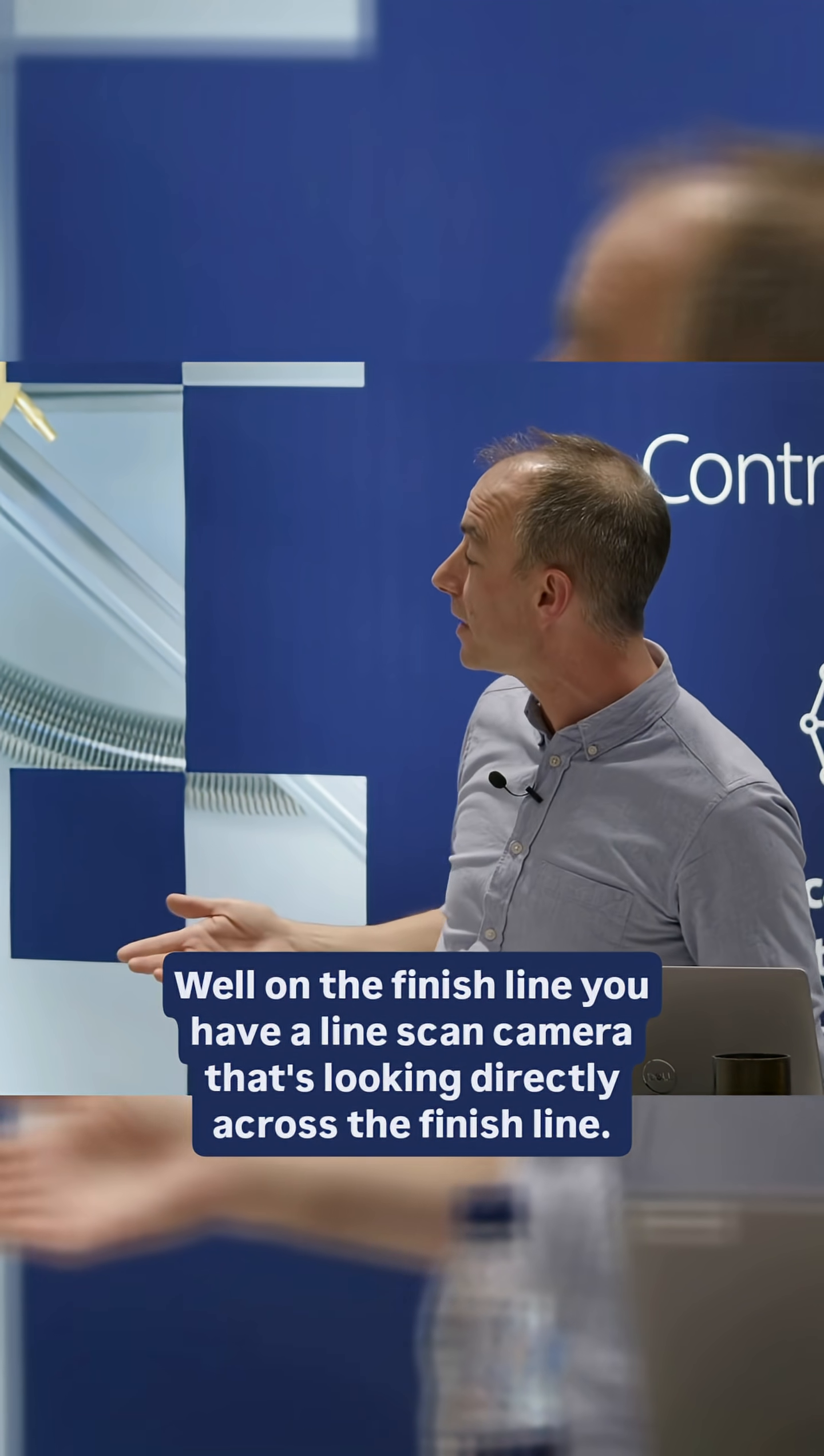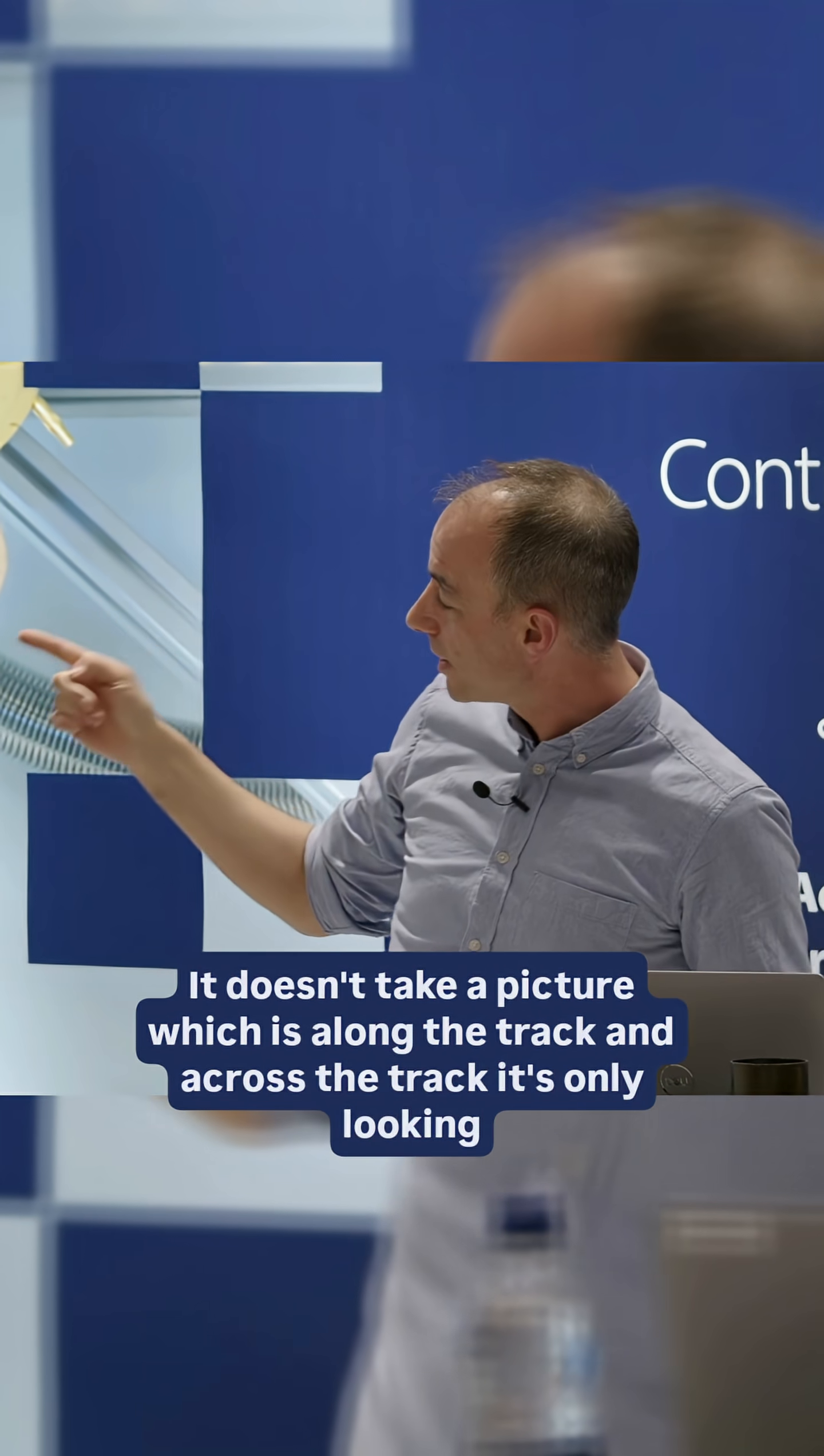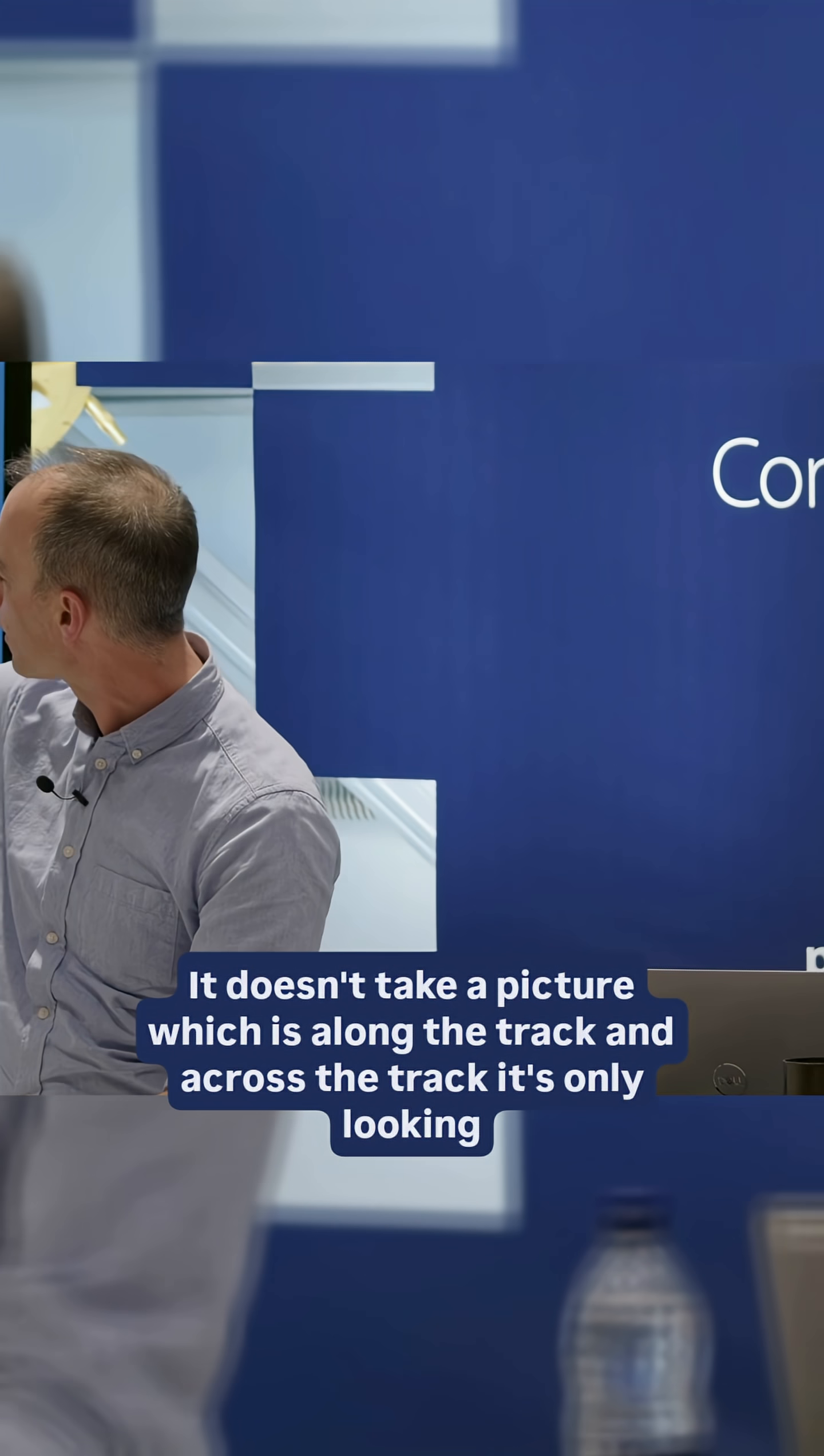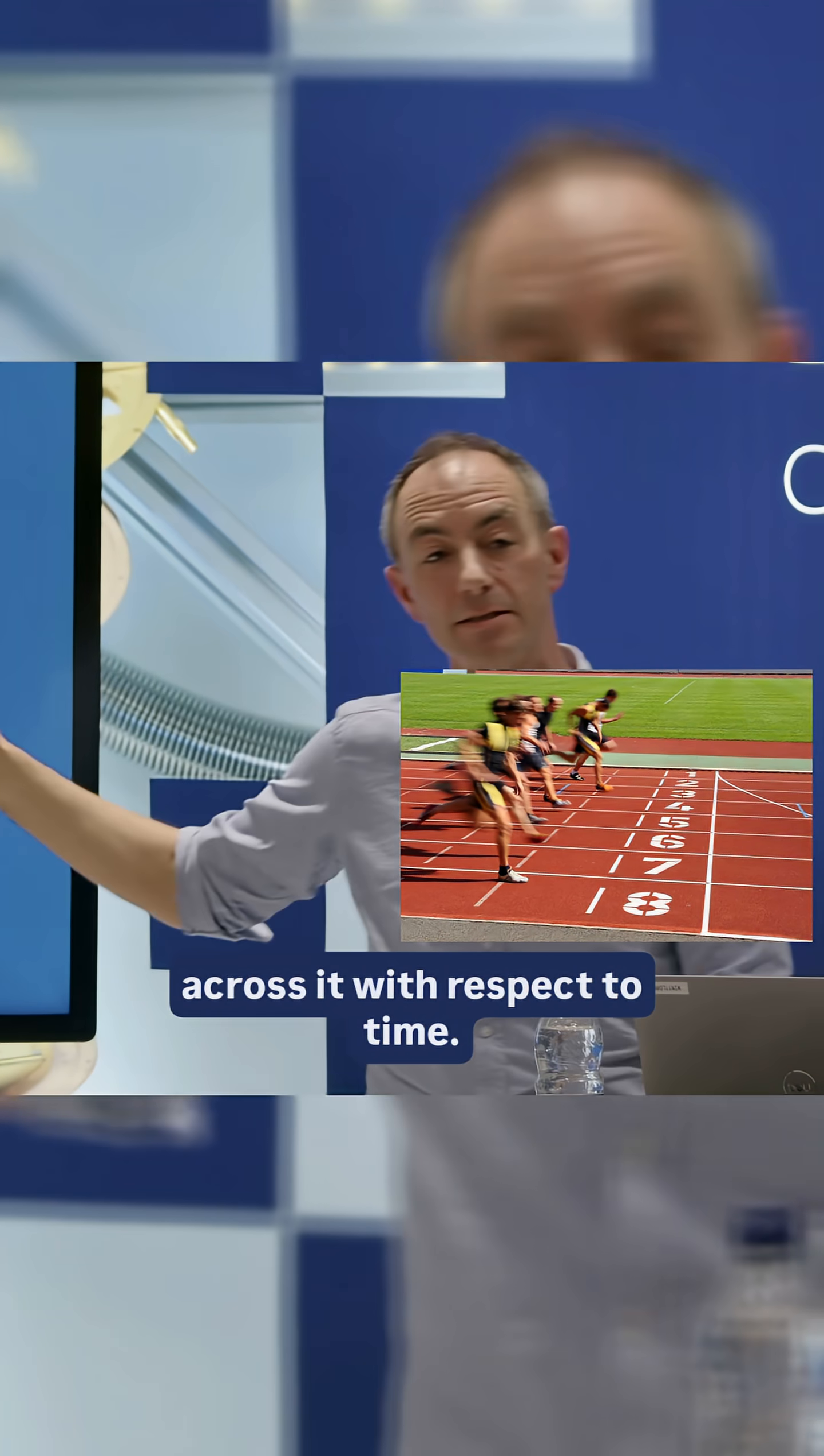Well, on the finish line, you have a line scan camera that's looking directly across the finish line. It doesn't take a picture which is along the track and across the track. It's only looking across it with respect to time.